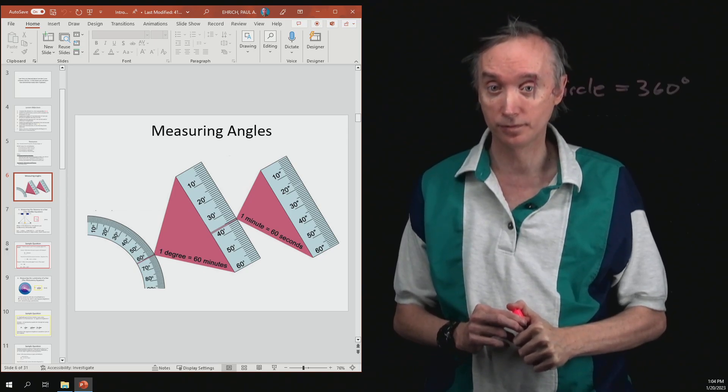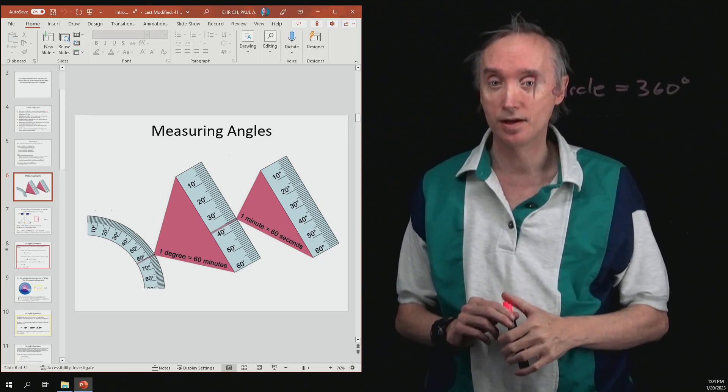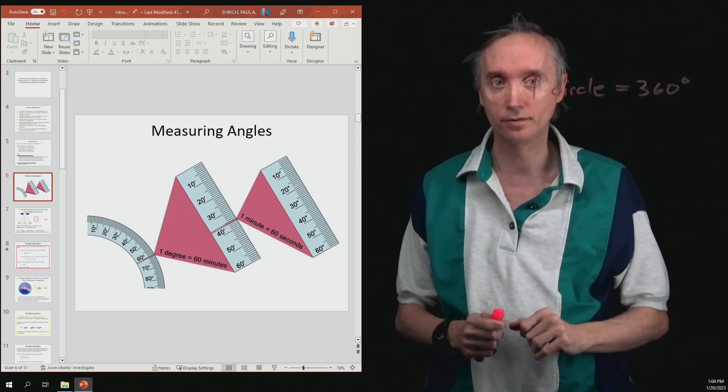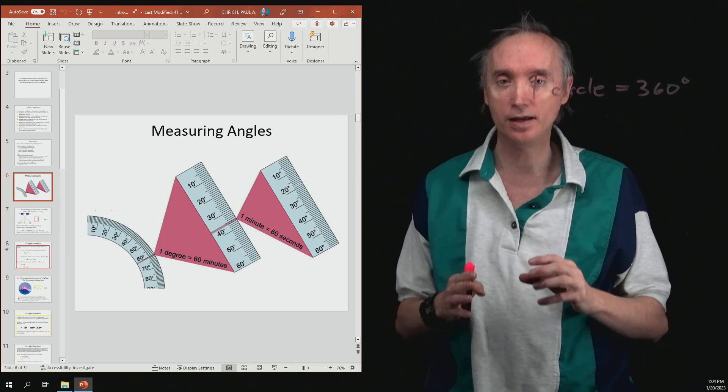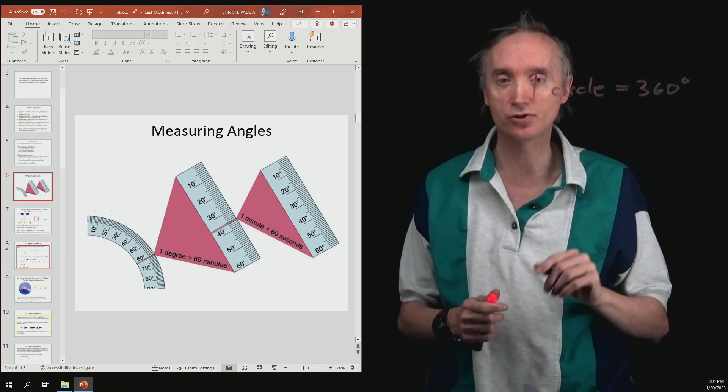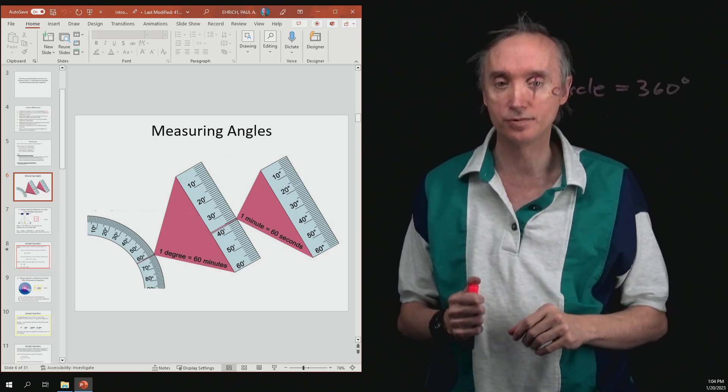That's pretty difficult, but astronomers can measure angles smaller than 1 degree. And so they have taken 1 degree and chopped it up into 60 parts.